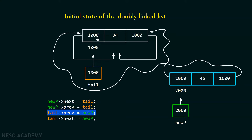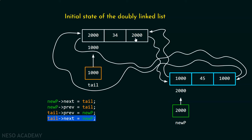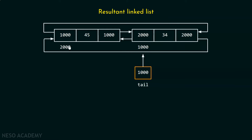After this, the prev part of this node must be updated so that it can point to this node — we must store address 2000. We know the address of this node is 2000. After this, we update the next part of this node so that it can point to this node; again, we store address 2000. The resultant linked list looks like this. We have successfully added this node at the beginning, and the tail pointer is still pointing to this node.